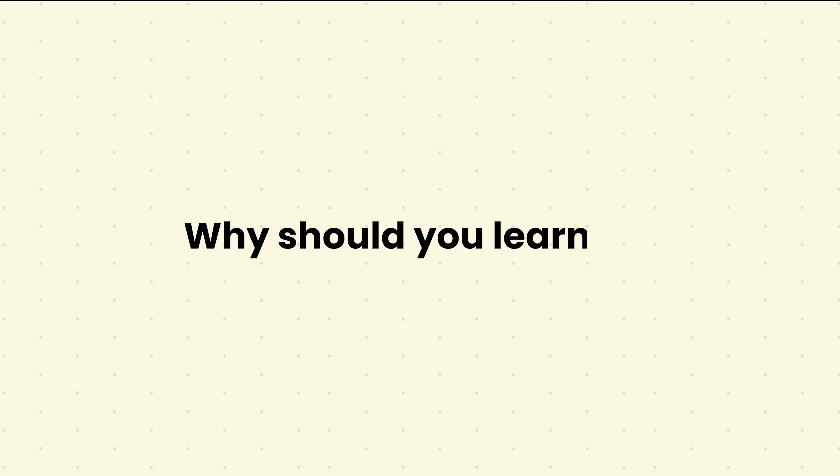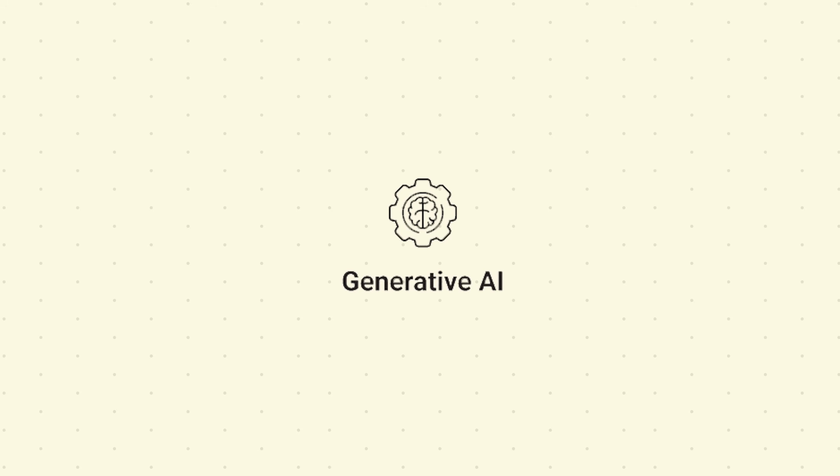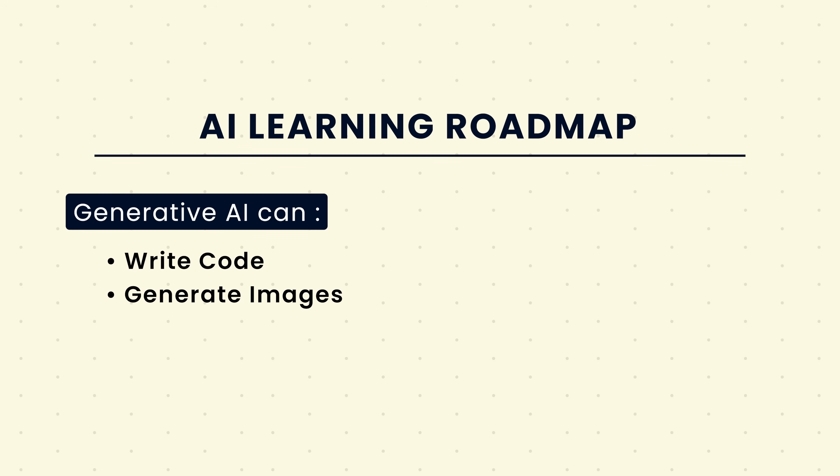So why should we bother learning AI? This whole AI, machine learning and deep learning thing has actually been around since 1950. But ever since ChatGPT got released in November 2022, there's been a recent boost in AI. This is basically generative AI, which is a subset of machine learning and deep learning. Generative AI can now write code, generate images, create music, PPTs and much more. So if you have the knowledge and know how to build things with AI, you can actually create a huge impact.